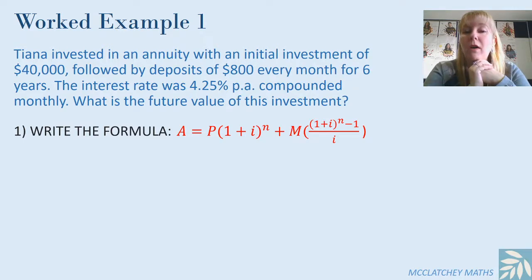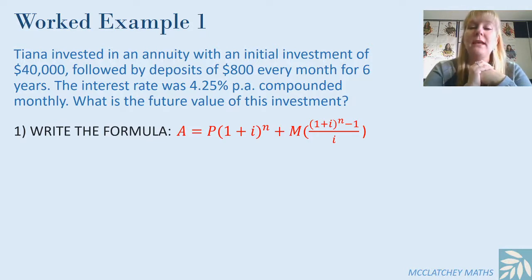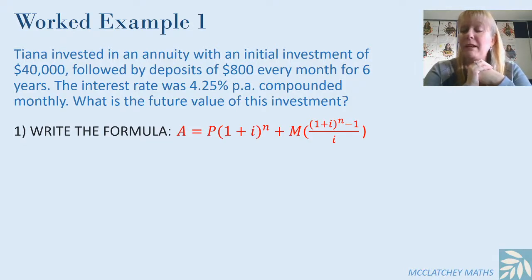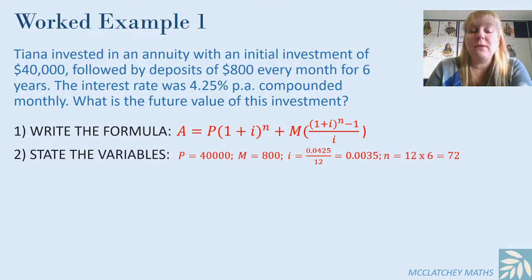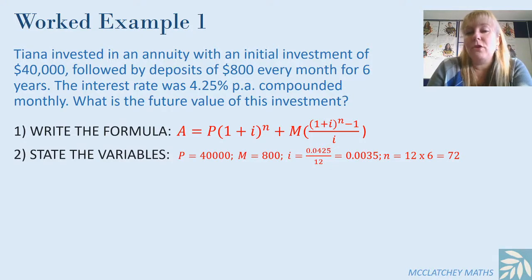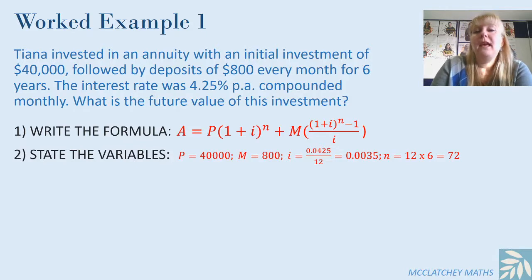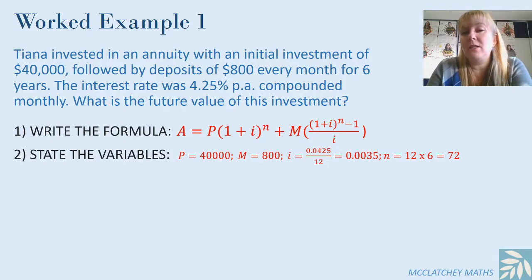So P(1 + i)^n — that's my normal compound interest formula on the QCAA sheet — and then the future value formula on the right, also on the QCAA formula sheet, and I've just added the two together because that's what we're effectively doing. So now I'm going to state my variables. The principal is $40,000 for my standard investment. The M value is my regular payment of $800. I'm transforming my interest rate and showing my working for that, and I'm also transforming my period into 72 months — it's important that I show my working for that.